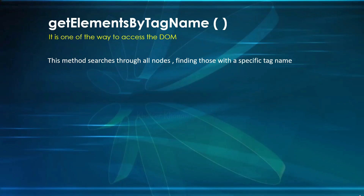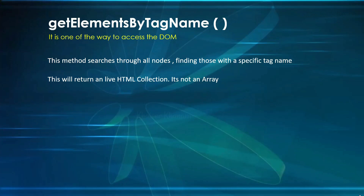We have getElementById and getElementsByClassName — any one of those selectors you can use to get your result. But in getElementsByTagName, the performance will be very heavy because of so much processing. In the same way that getElementsByClassName was returning a liveHTMLCollection, this will also be returning a liveHTMLCollection. It is not an array — it just looks like an array. But when we try to apply all the methods available to arrays, we will not be able to. Also, we cannot use forEach loop to loop through the collection.